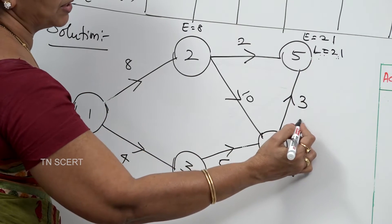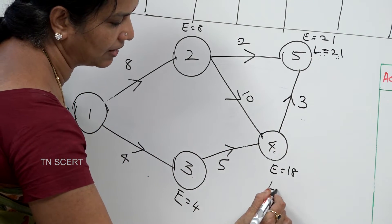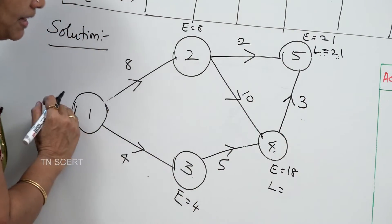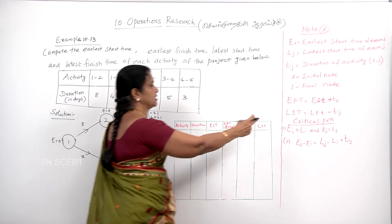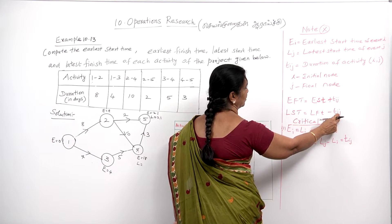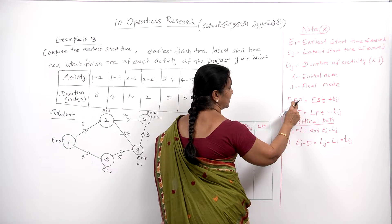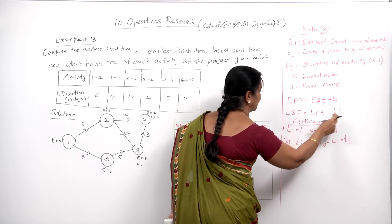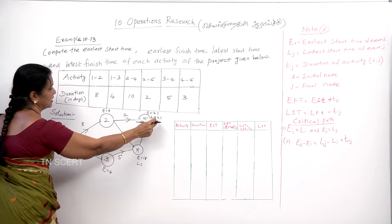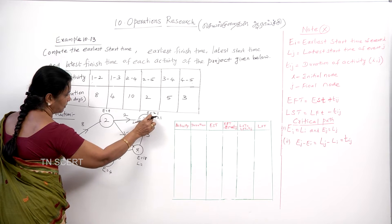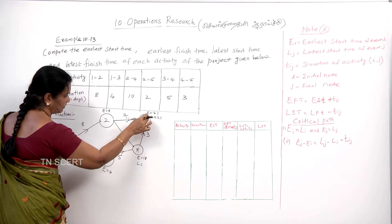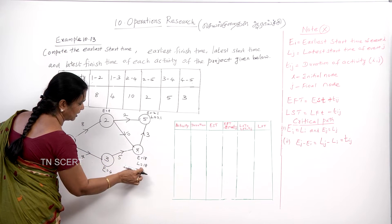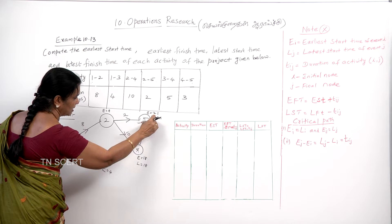In this L equals 21, what is L equal to when duration is 3? We will subtract here — we will minus. That is the condition. In the final step, if we subtract here: for node 5, here is 4. 3 minus 10 gives L equal to 18. So 21 minus 3 equals 18. This duration gives us the minus.